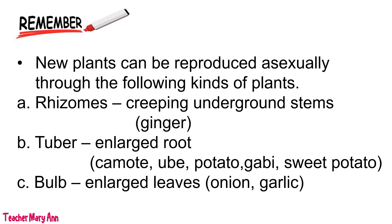Rhizomes — that is creeping underground stems. The example is ginger. Tuber — that is an enlarged root. Examples are kamote, ube, potato, gabi, and sweet potato.